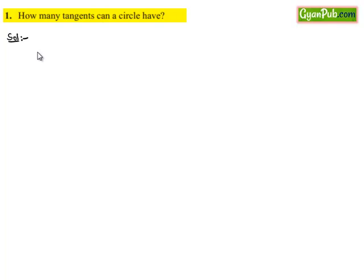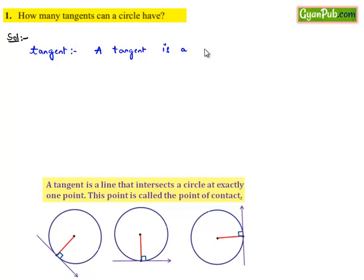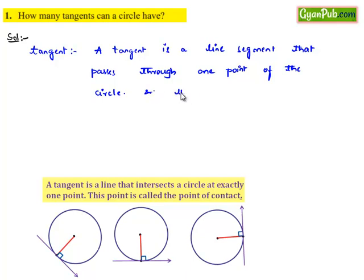Initially, before going to that, let us know the definition of what is a tangent. A tangent is a line segment that passes through one point of the circle, and that point must lie on the circumference.